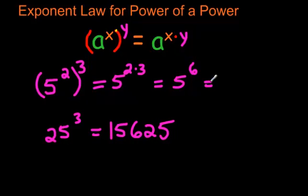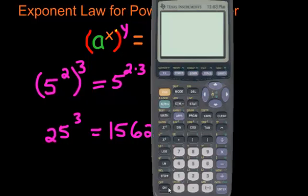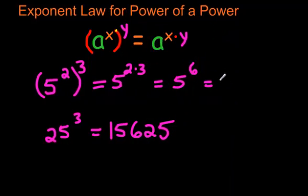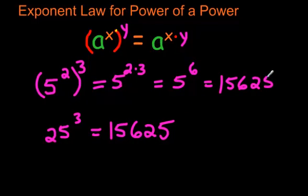So 5 exponent 6, if you do that on your calculator, 5 exponent 6, sure enough, 15,625. And that is the answer. So that's how you do power of a power.